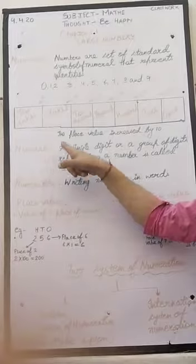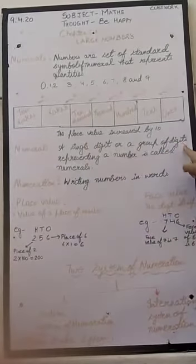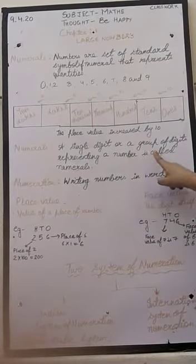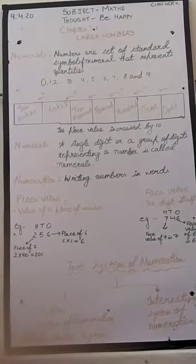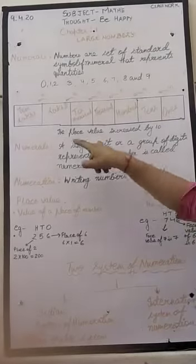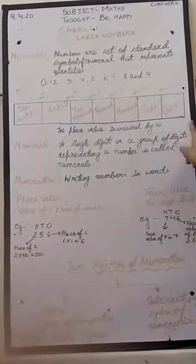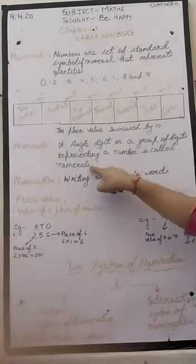Now let's come to the definition of numeral. What is numeral? A single digit or a group of digit representing a number is called numeral. Now which means that any digit is forming is called as numeral. And if a group of digit is also called as numeral.